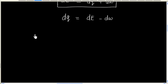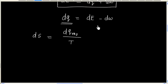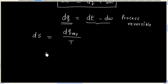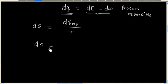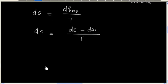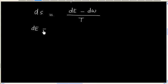So we have an expression for dW and an expression for dS, that is dq_reversible divided by temperature. Now let us say the process is reversible, so we can write dq equals dE minus dW, and therefore dS becomes (dE minus dW) divided by temperature. You may remember dE can also be written as NcV dT for N moles of gas.